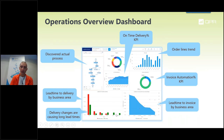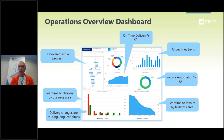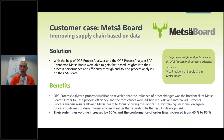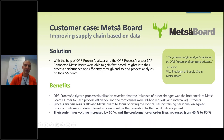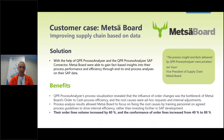Then there are operations overview dashboards, available directly from the QPR Process Analyzer: the process, lead time by business area, on-time delivery KPI charts, order line trends, invoice automation KPIs, lead times, and whatever else you want on your dashboards. As a closing statement from this case: 'The process insight and facts delivered by QPR Process were priceless' — that's what Jari Vuori, Vice President of Supply Chain, told us. It was really helping them reach process excellence.